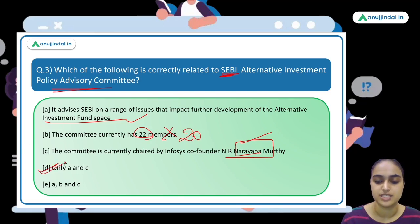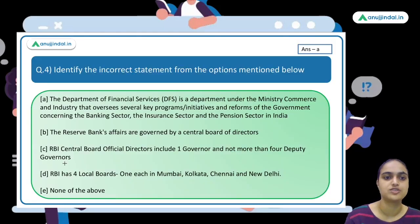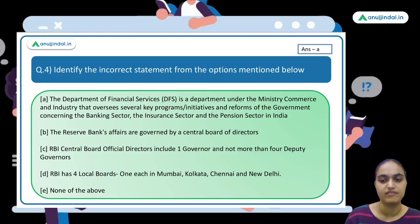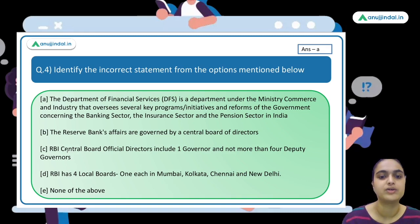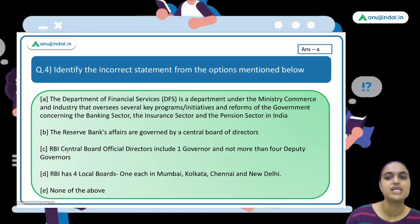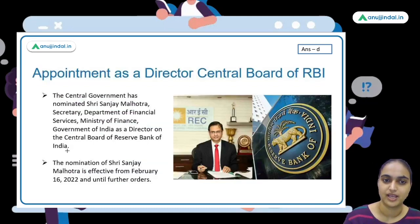The fourth question asks to identify the incorrect statement from options relating to two topics: the Department of Financial Services under one of the government ministries, and the Central Board of RBI. The central government has recently appointed a director on the Central Board of RBI.